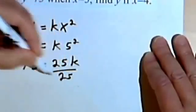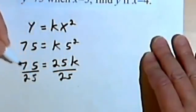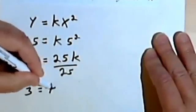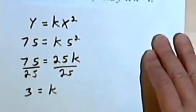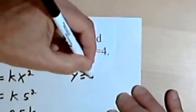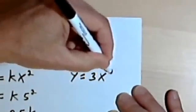So let's find out what k is. Divide both sides by 25. And I'm going to get a 3. So k is 3. So y equals 3x squared.